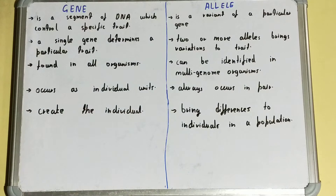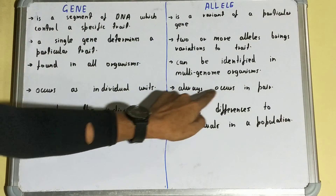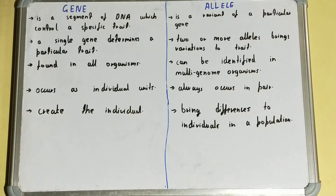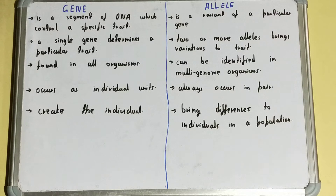In a particular individual, the gene will be of the same type — the individual will have only one kind of characteristic, so it occurs as an individual unit. But an allele always occurs in pairs. To differentiate between two individuals, we differentiate on the basis of alleles, as they both will have different variations of the same characteristic.